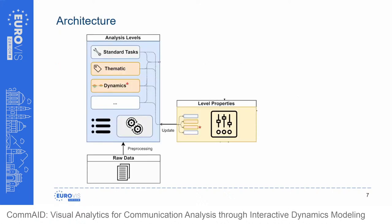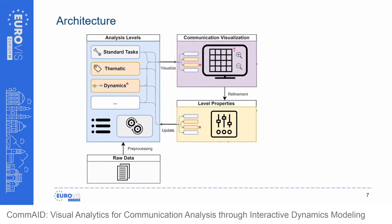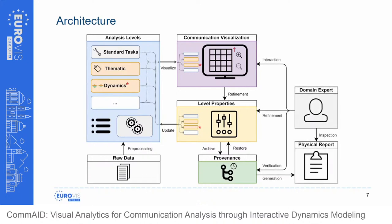We leverage a common data model to support combination of these levels. The communication network can be described as a multi-digraph G, with V being a set of vertices representing communication participants, and M a multi-set of ordered pairs of vertices representing a communication event. Additional metadata and content can be modeled by defining an information function I, mapping a communication event from multi-set M to a data space D. Individual analysis levels can be generically defined as operators that act on the vertex space V, the edge space M, and the information function I — all forming a graph-like shared data space used internally to store all information and facilitate the analysis. To allow verification and build confidence, a provenance module tracks all interactions.